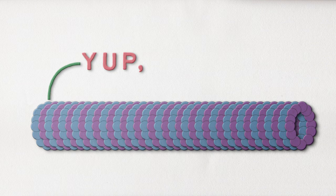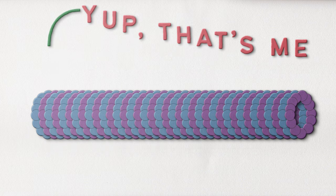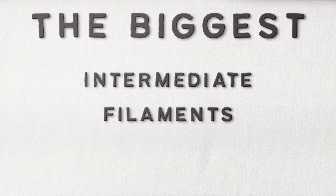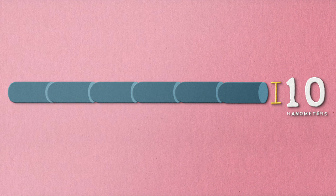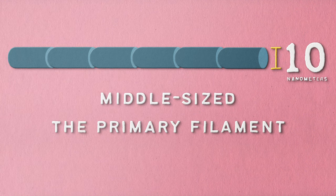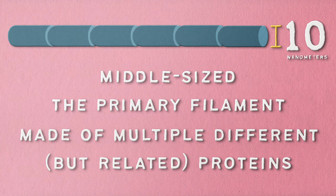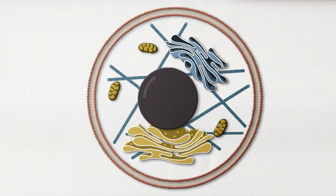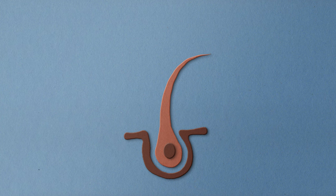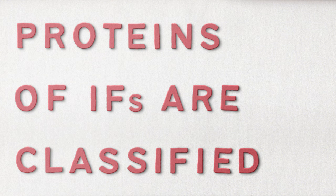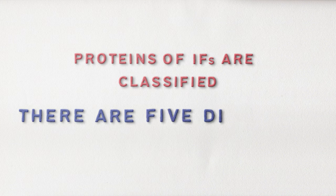Now that we know about the biggest filament, let's move on to the intermediate-sized filament, very aptly named intermediate filaments. Intermediate filaments are, well, intermediate — not the biggest and not the smallest, with a diameter of about 10 nanometers. And despite being the middle-sized filament, they're actually the primary filament in the cytoskeleton. Intermediate filaments, which we can also call IFs, are made of multiple different but related proteins with similar structural features, and are also the most stable component in the cytoskeleton. Overall there are five different IF protein classes.